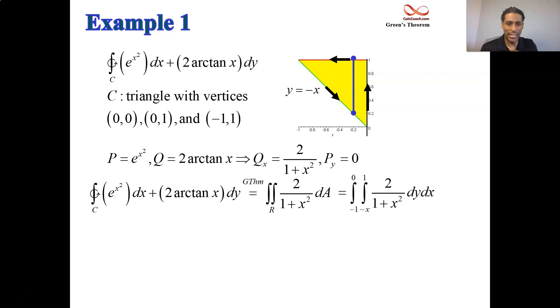Then we integrate with respect to Y. This has no Y in it at all. So the anti-derivative of this is this guy times Y. After integrating with respect to Y and replacing the Y with a 1 and the Y with a negative X and subtracting, you end up with 1 plus X. That 1 plus X then gets multiplied by your 2 over 1 plus X squared.